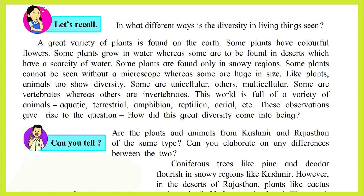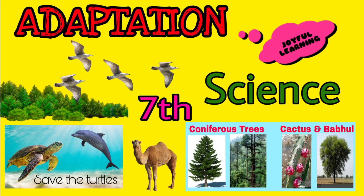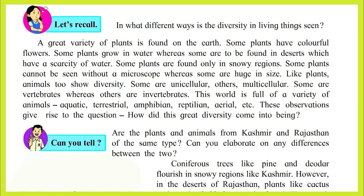Whereas some are huge in size. Like plants, animals also show diversity — some are unicellular, others multicellular; some are vertebrates whereas others are invertebrates. The world is full of a variety of animals: aquatic, terrestrial, amphibians, reptilian, aerial, etc.